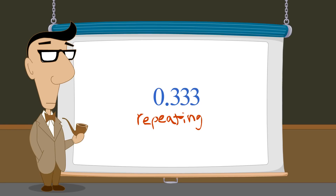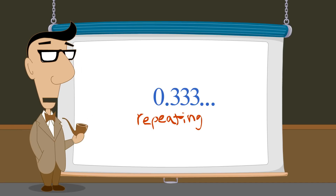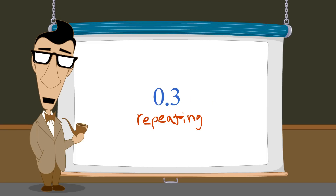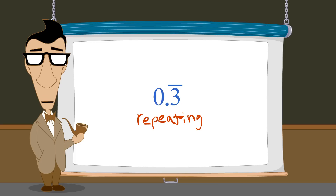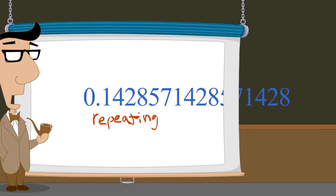Repeating decimals can be written with three dots, called an ellipsis, to indicate that the pattern repeats forever. Or a bar can be placed over the digits which repeat. For instance, we can indicate a repeating three by placing a bar over the three. Likewise, a bar over a sequence of digits indicates that the sequence repeats forever.